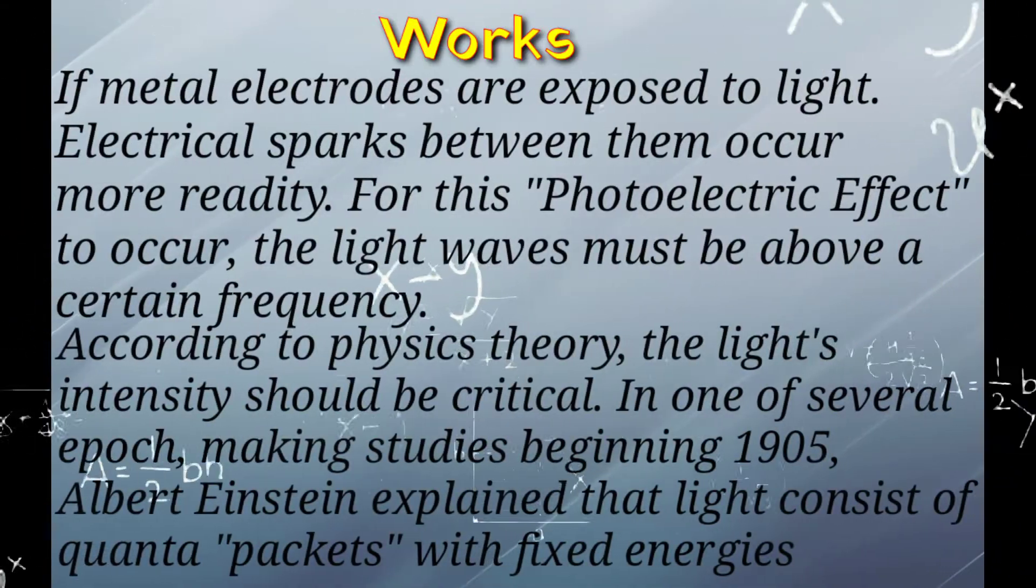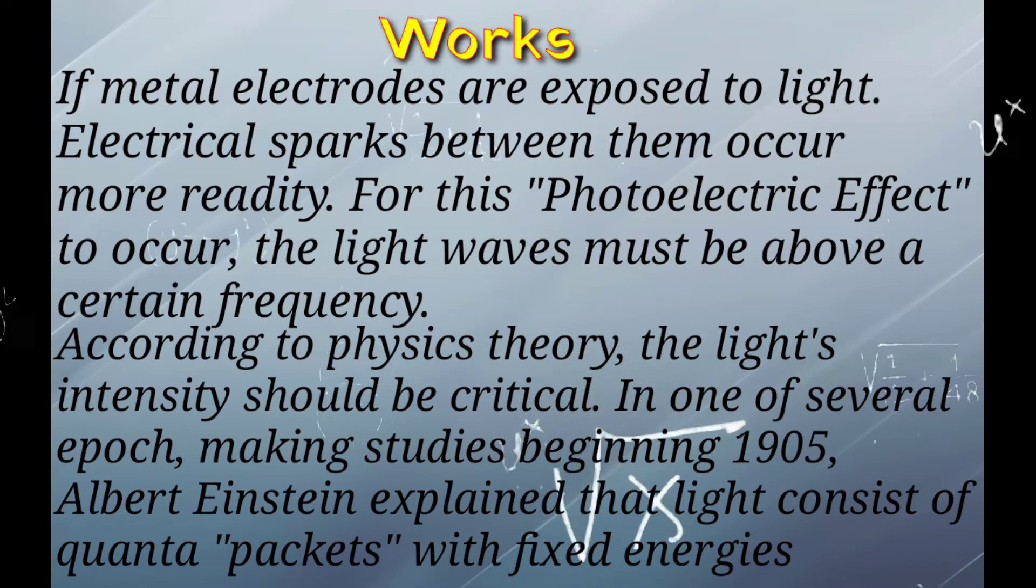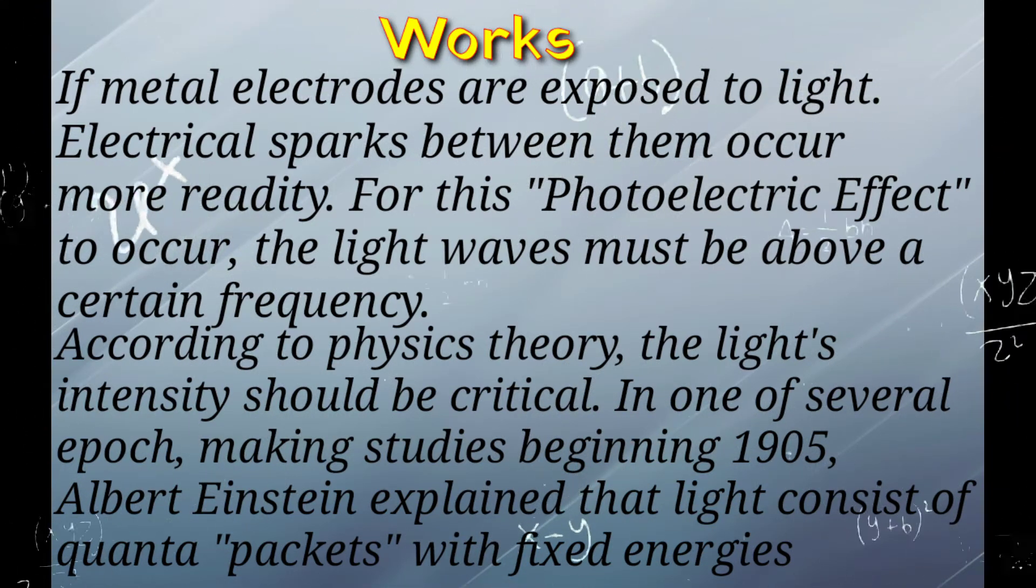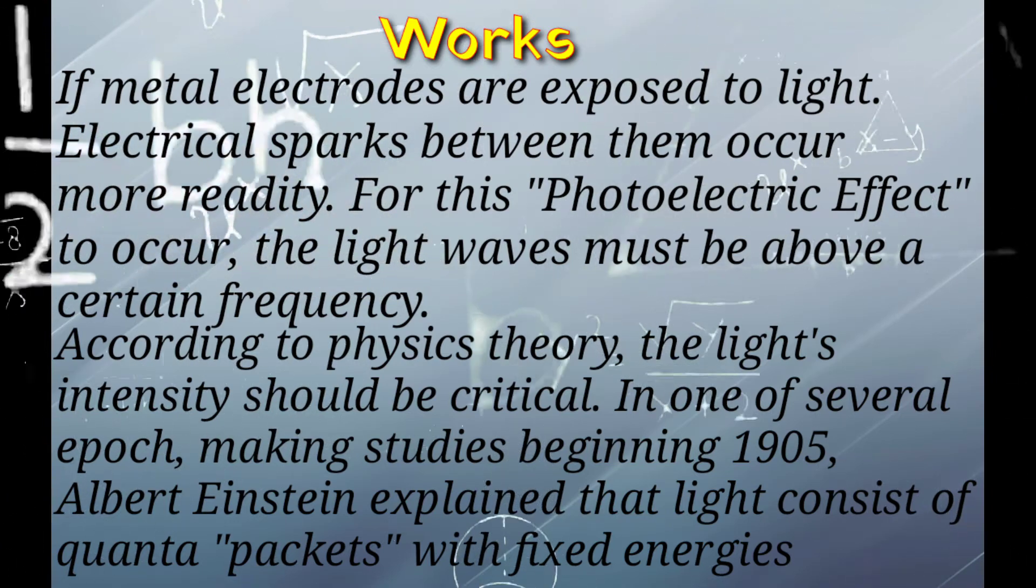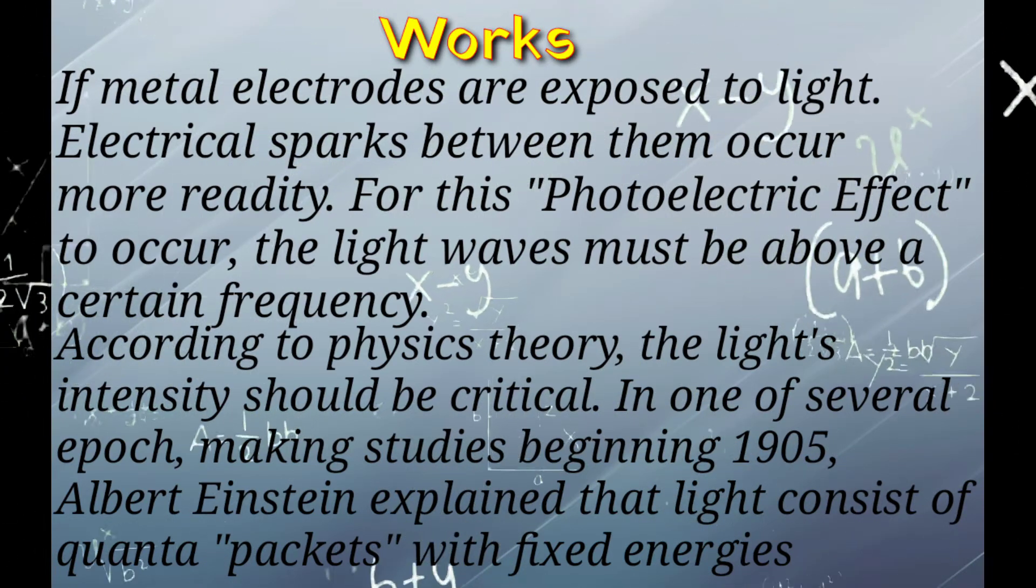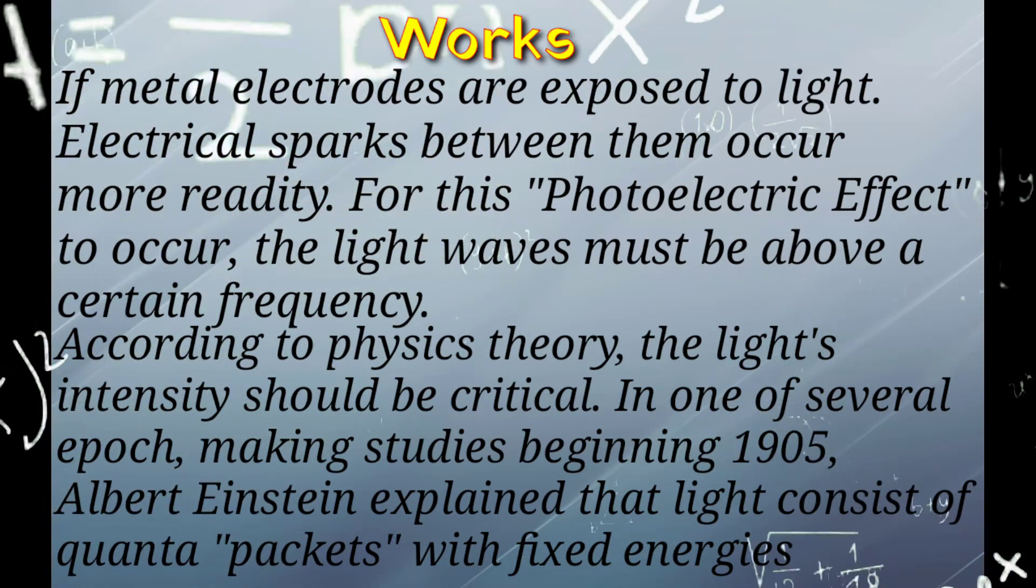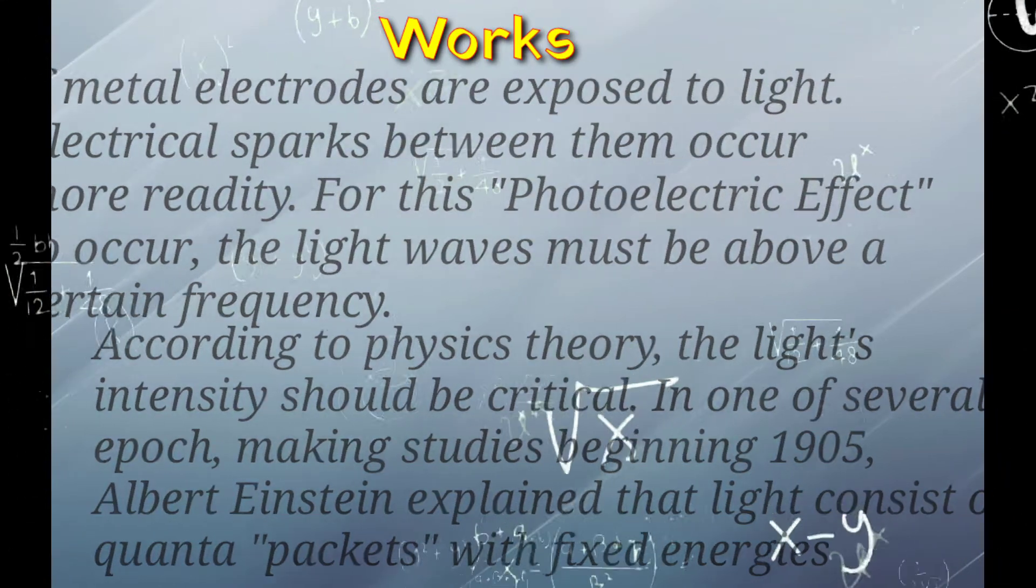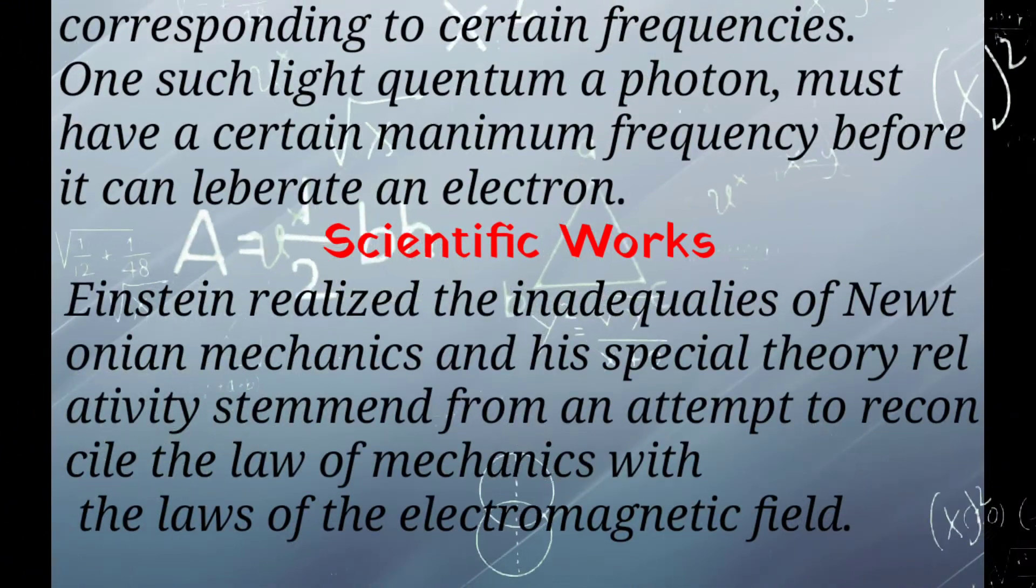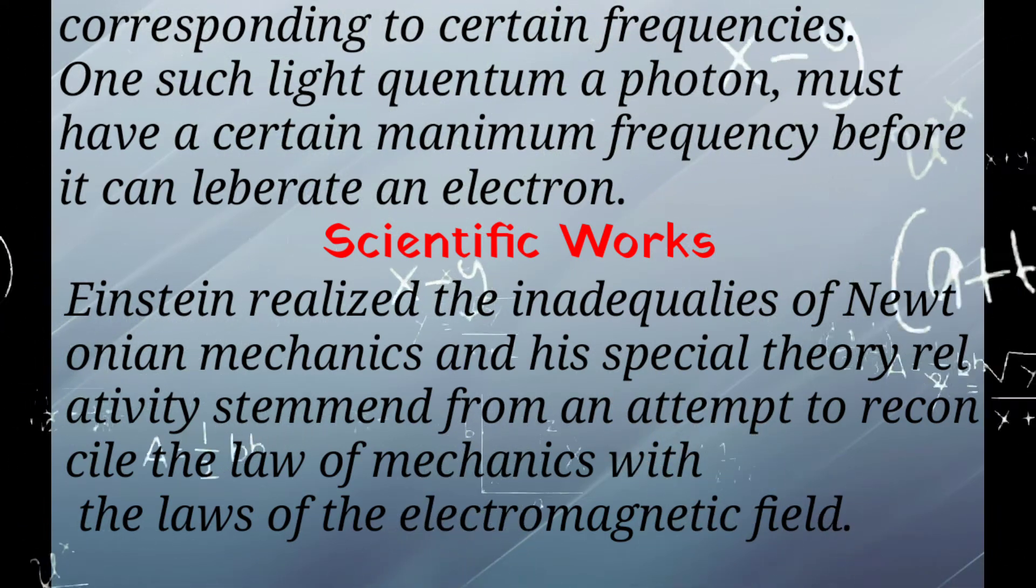Albert Einstein's works. If metal electrodes are exposed to light, electrical sparks between them occur more readily. For this photoelectric effect to occur, the light wave must be above a certain frequency. According to physics theory, the light intensity should be critical. In one of several epoch-making studies beginning in 1905, Albert Einstein explained that light consists of quantum packets with fixed energies corresponding to certain frequencies. One such light quantum photon must have a certain minimum frequency before it can liberate an electron.